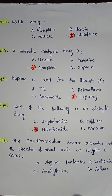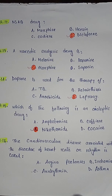Question number sixteen: the cardiovascular disease associated with the disorder of heart rate or rhythm is called — option A angina pectoris, option B ischemia, option C arrhythmia, option D asthma.